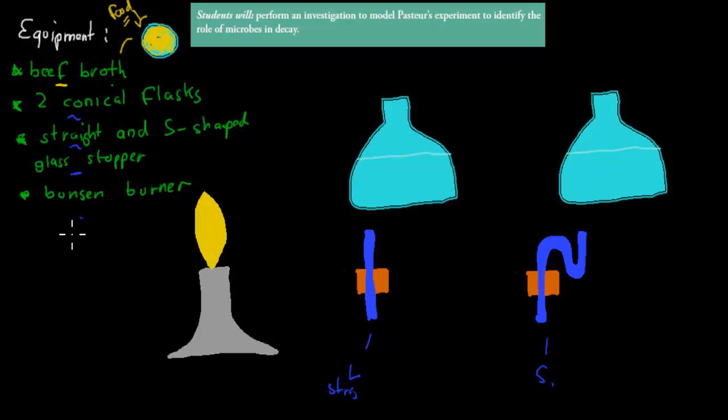What you would have done first is you would have had your two identical flasks. You would have taken your broth, which I'll use yellow coloring for, and you put the broth into both flasks.